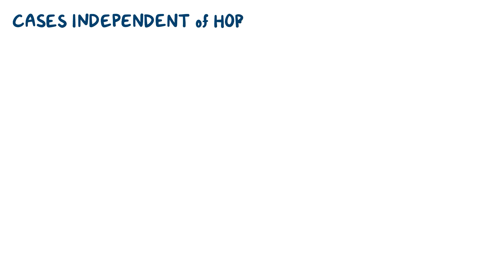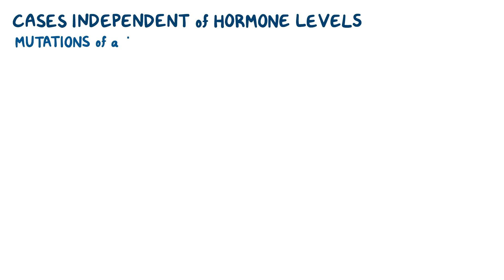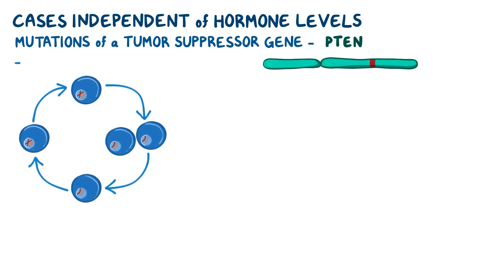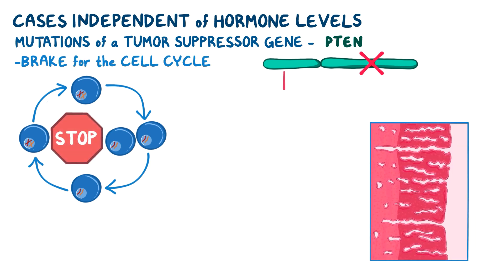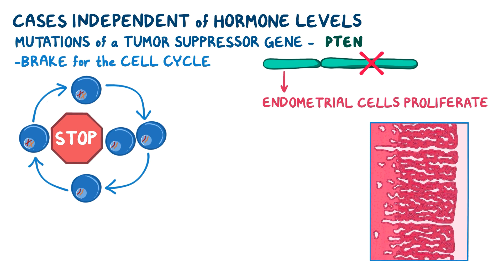Certain cases of endometrial hyperplasia can occur independent of estrogen and progesterone levels. These cases are often associated with mutations of a tumor suppressor gene called PTEN, which normally acts like a brake on the cell cycle. When this gene becomes defective, cells in the endometrium will grow and proliferate out of control, leading to hyperplasia.